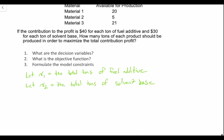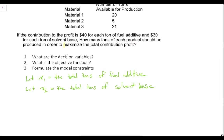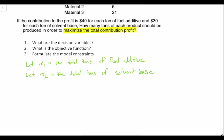What is the objective function? We are looking to maximize the total contribution profit, so our objective function is a maximization problem. The max of z is equal to — we have two decision variables, fuel additive and solvent base. We're told that we get $40 for each ton of fuel additive, so we write this as 40 times x1, plus $30 for each ton of solvent base. So our max z is equal to 40x1 plus 30x2.